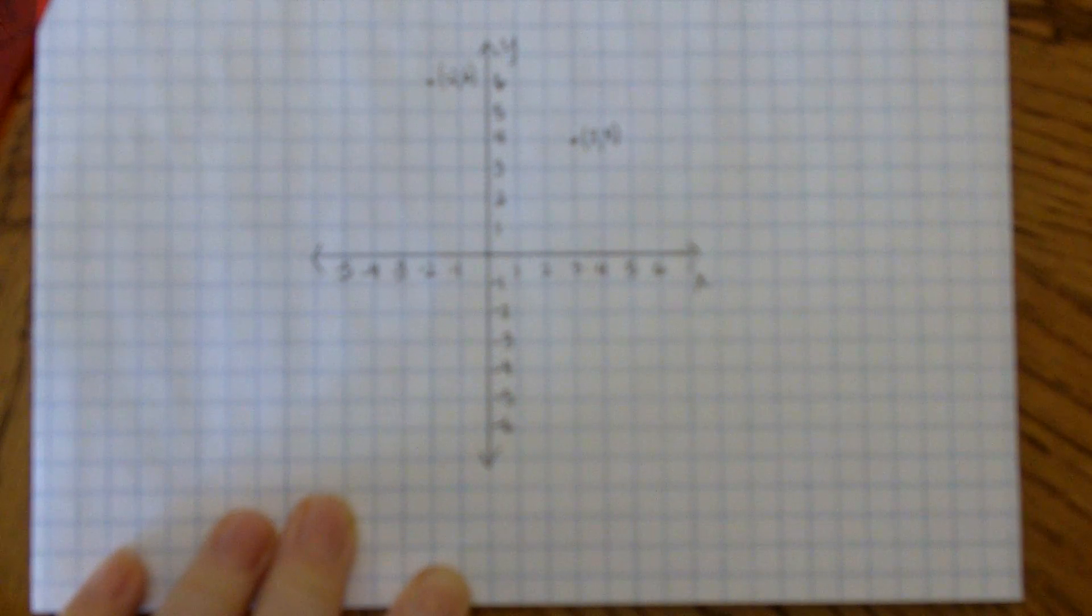And that's all there is to graphing two ordered pairs. Notice all of the standards that were met with the ruler, the scaling, and the labeling.